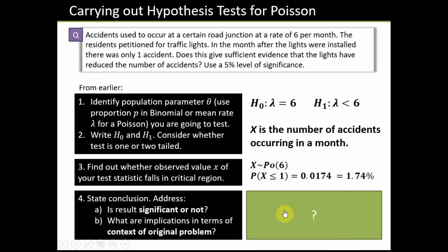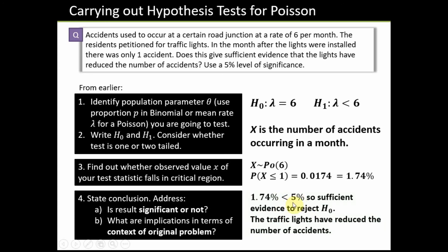We then decide whether that's significant by comparing it to our significance level, which is 5%. In this case, 1.74% is lower than 5%, so we say that is unlikely to happen if the null hypothesis is true. Hence we have sufficient evidence to reject the null hypothesis. In the context of the question, we conclude that the traffic lights have reduced the number of accidents.